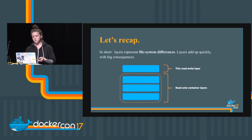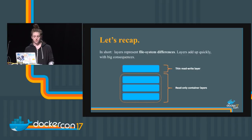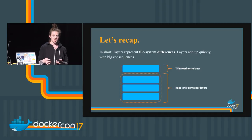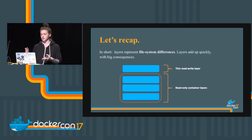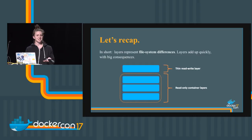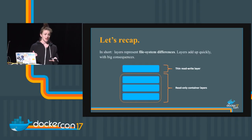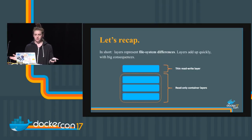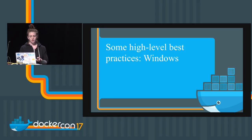So in short: layers are file system differences. These add up really quickly and have really big consequences. The more things I do to that thin read-write layer on top of my base image, the larger my container is going to be, the longer it's going to take to build and deploy. And if I can pick a base image that in turn has fewer layers, my total stack is going to have fewer layers — and fewer layers means a smaller container.